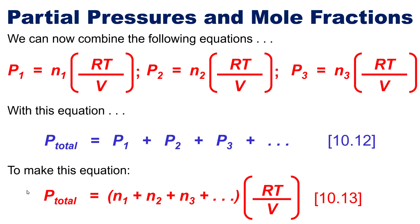To make this a new equation where the total pressure of an entire system for however many gases you have is simply equal to the sum of all of those individual gases' moles added together and then multiplied by RT over V. Pretty simple right?